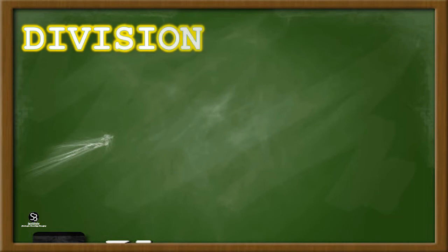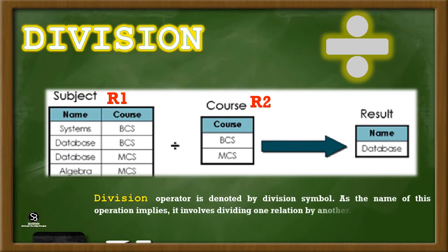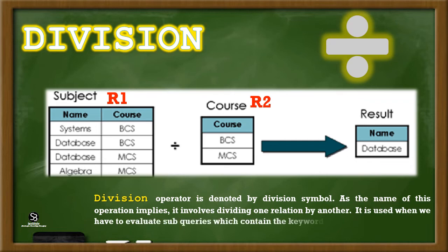Division. The Division operator is denoted by the division symbol. As the name implies, it involves dividing one relation by another. It is used when we have to evaluate subqueries which contain the keyword ALL. Division is not implemented directly in SQL.